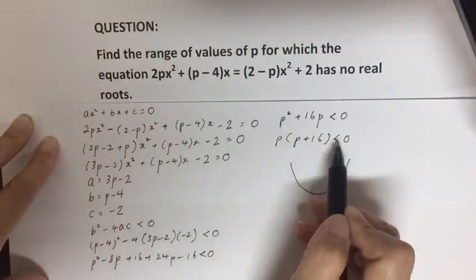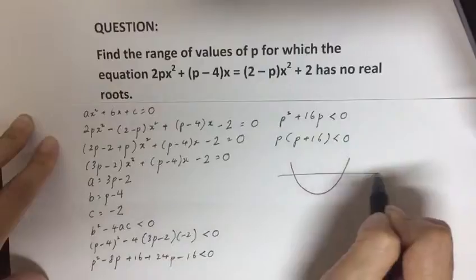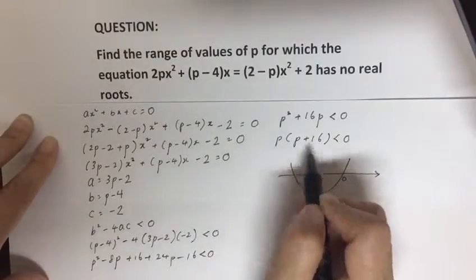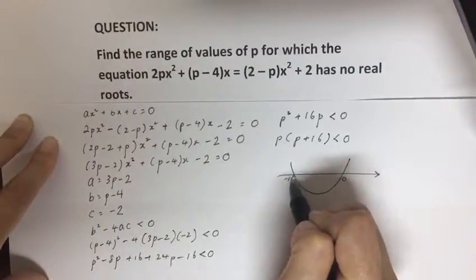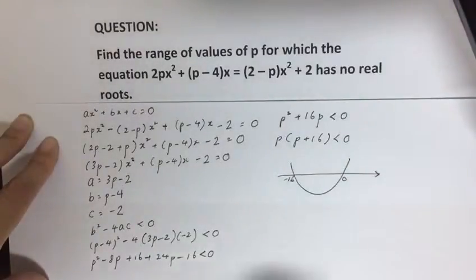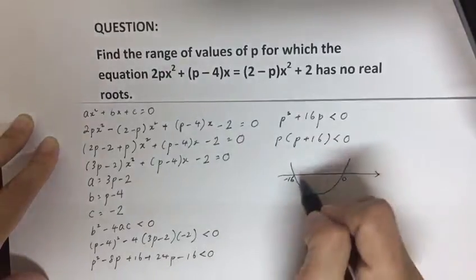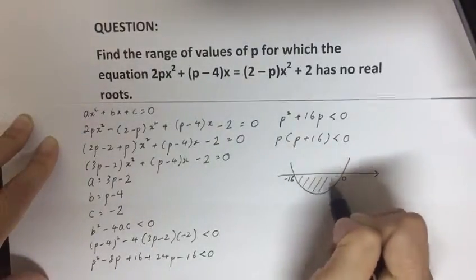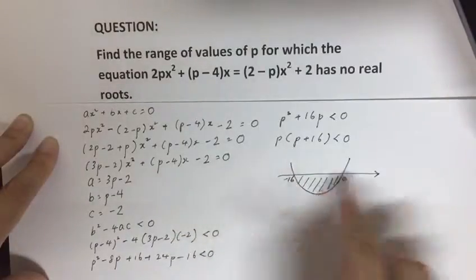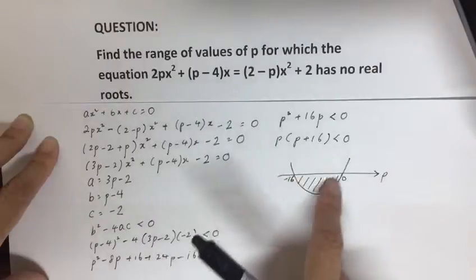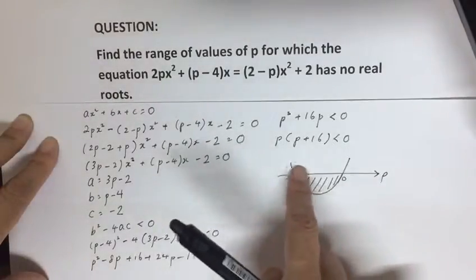If it is equal to 0, then you'll cut the x-axis at these points: 0 and -16. And because you want the less than 0 part, it should be this portion whereby the curve is lower than the p axis. So this is the region that you want, which will be your solution.